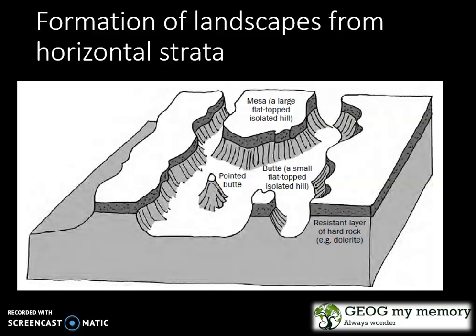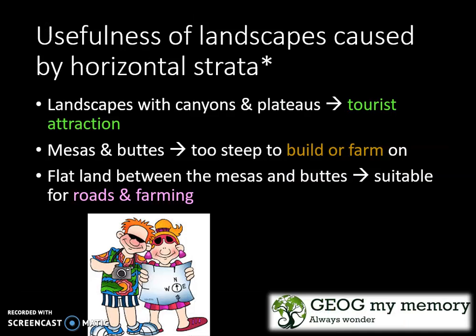Features such as mesas and buttes are common in arid regions like the Karoo. Landscapes with canyons act as a tourist attraction. The mesas and buttes are too steep to build on or farm, but the flat land between them is suitable for roads and farming.